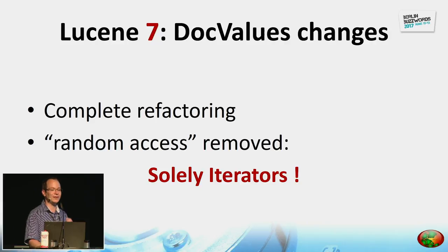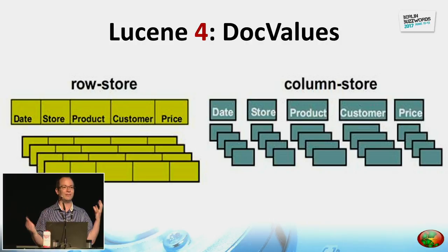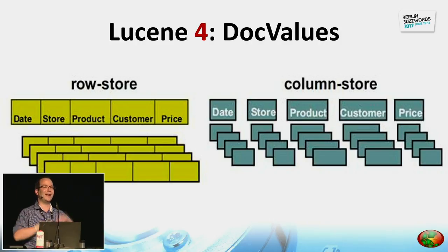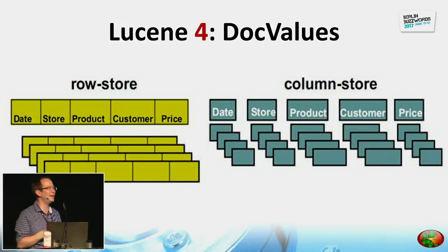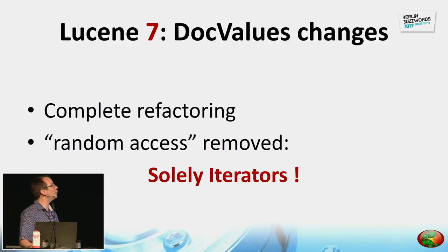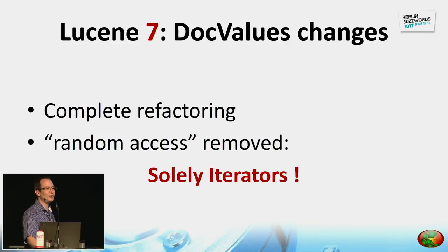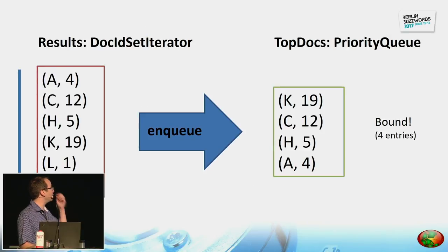In Lucene 7 there was a change to doc values. For sorting, you can do lookups on values by an index in the array. Everybody who knows sorting knows you need random access to compare values. Actually in Lucene this is different — we do not need random access, and because of that we removed it in Lucene 7. If we do not allow efficient random access, we can improve the storage of doc values quite a lot.